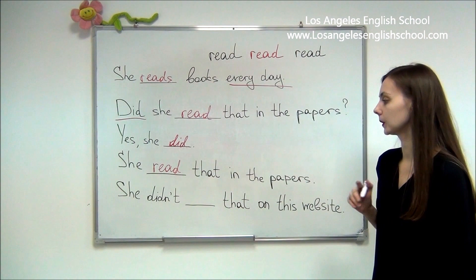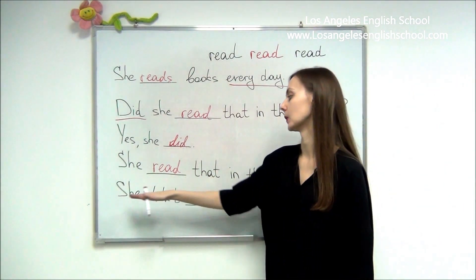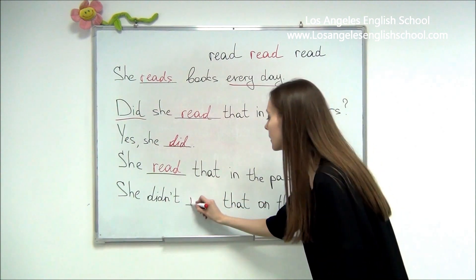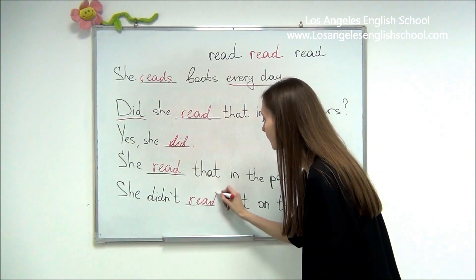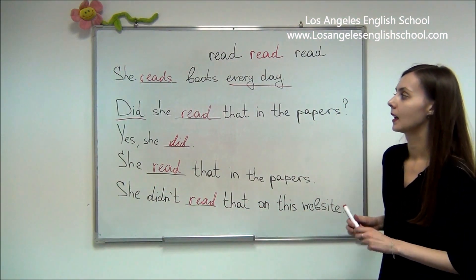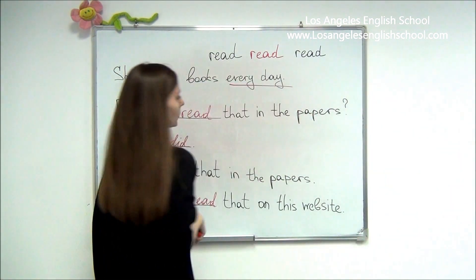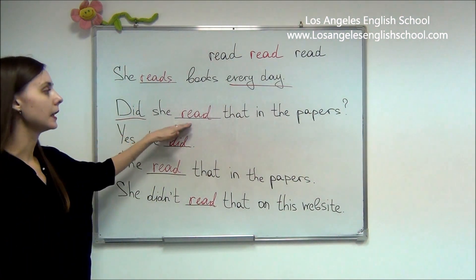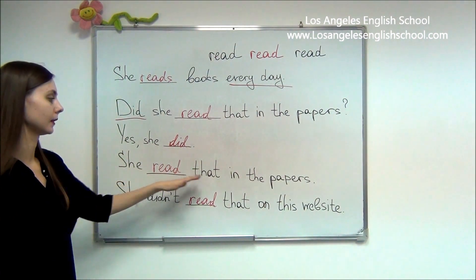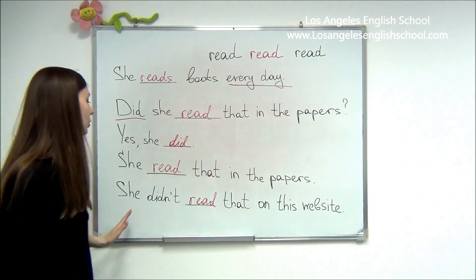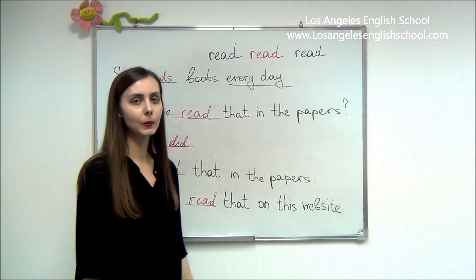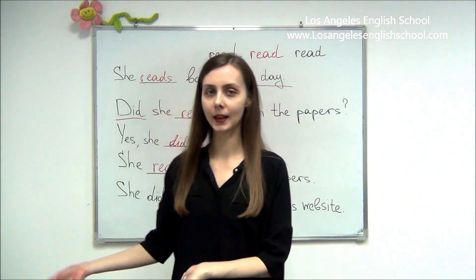Now let's practice the negative with 'didn't': 'She didn't read that on this website.' Let's practice again — repeat after me: 'Did she read that in the papers? Yes, she did. She read that in the papers. She didn't read that on this website.' Well done. Now let's go to our next verb.